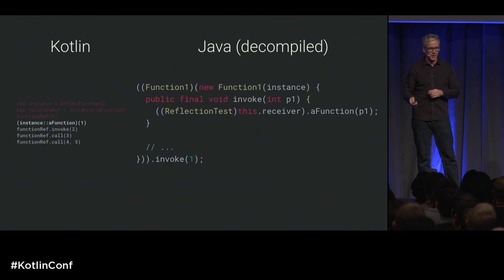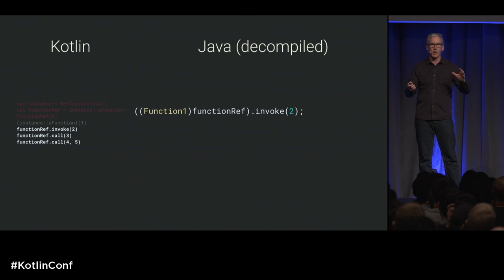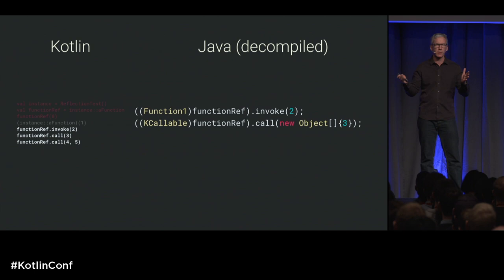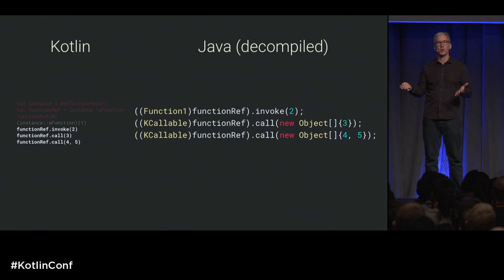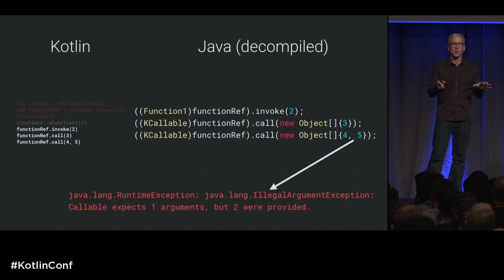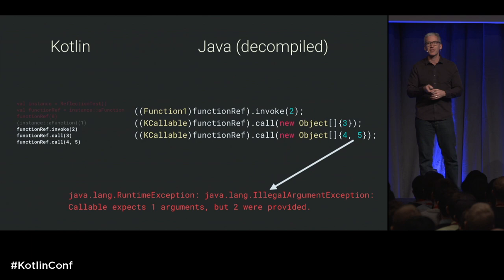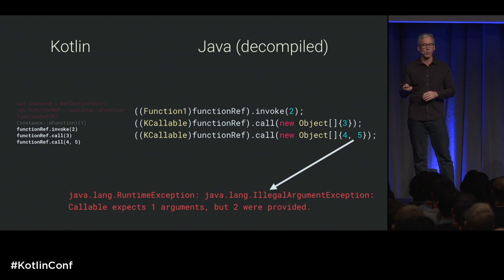There are different ways to invoke and call a function reference. You can call invoke on it — which ends up in that method inside the inner class — or you can call call. With call, the parameter gets auto-boxed into an object array. You can even call it with a nonsense number of parameters: I can call something that took one int with two ints instead. This does not result in a build error — it results in a runtime error. There's clearly something different going on between invoke, which calls directly into the function, versus the call mechanism, which uses Java reflection going down to native.